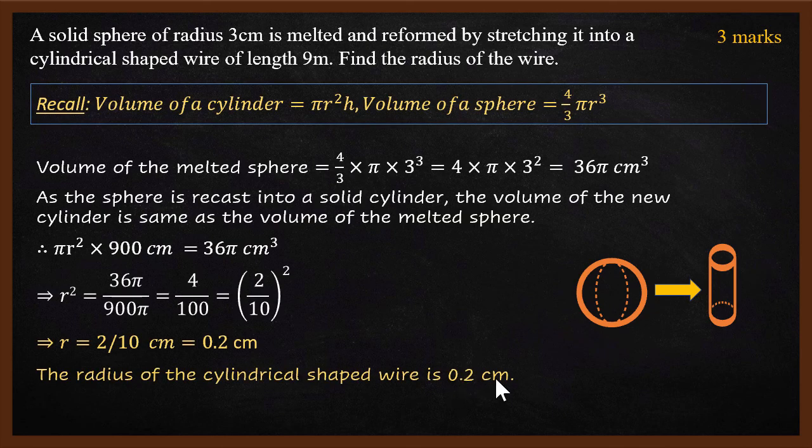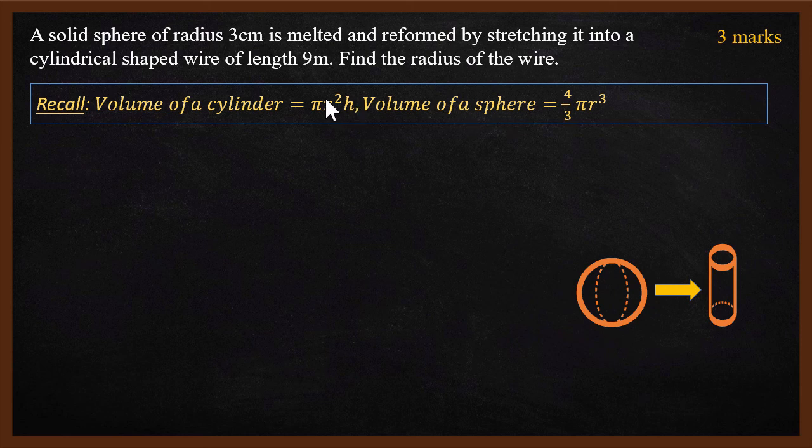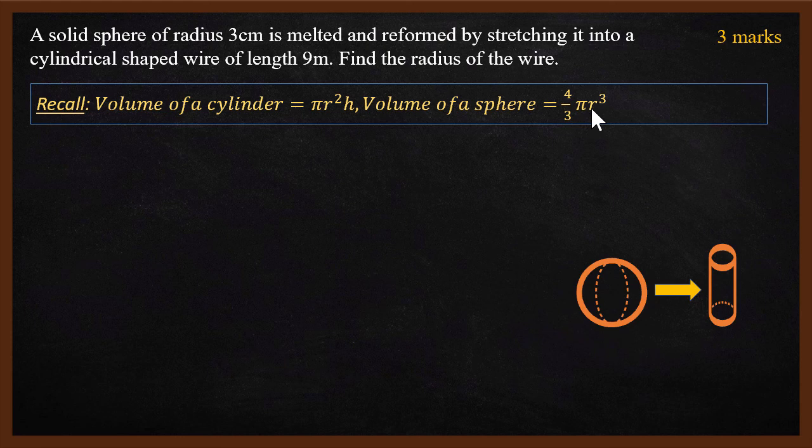The answer is 0.2 cm. How did we get 0.2 cm? First step is knowing the volume of a cylinder and volume of a sphere formula. We need to know the formula that gives us volume of a cylinder once we know the radius and the height. Similarly for a sphere, we need to know the formula that gives the volume once we know the radius. Without these formulas, you can't solve the problem.